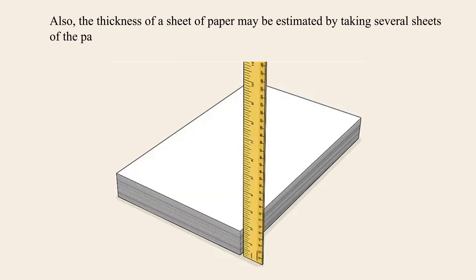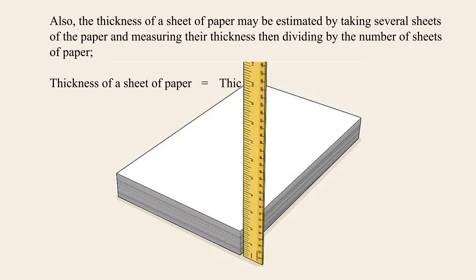Also, the thickness of a sheet of paper may be estimated by taking several sheets of the paper and measuring their thickness, then dividing by the number of sheets of paper. Thickness of a sheet of paper equals thickness of n papers over number of papers, n.